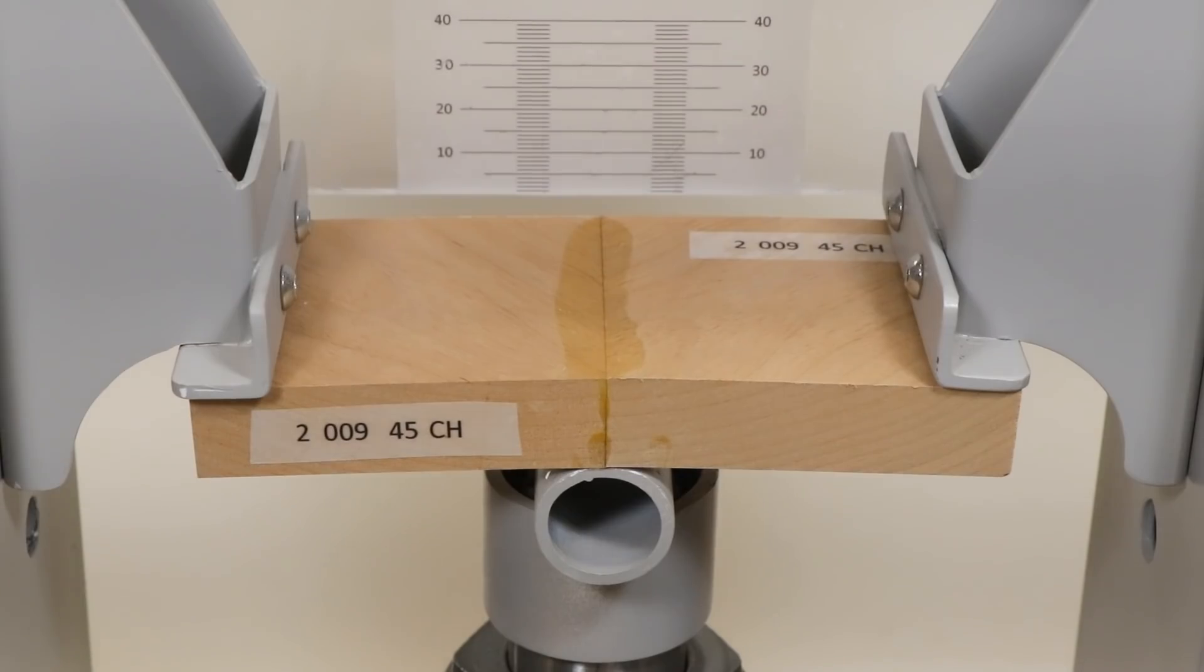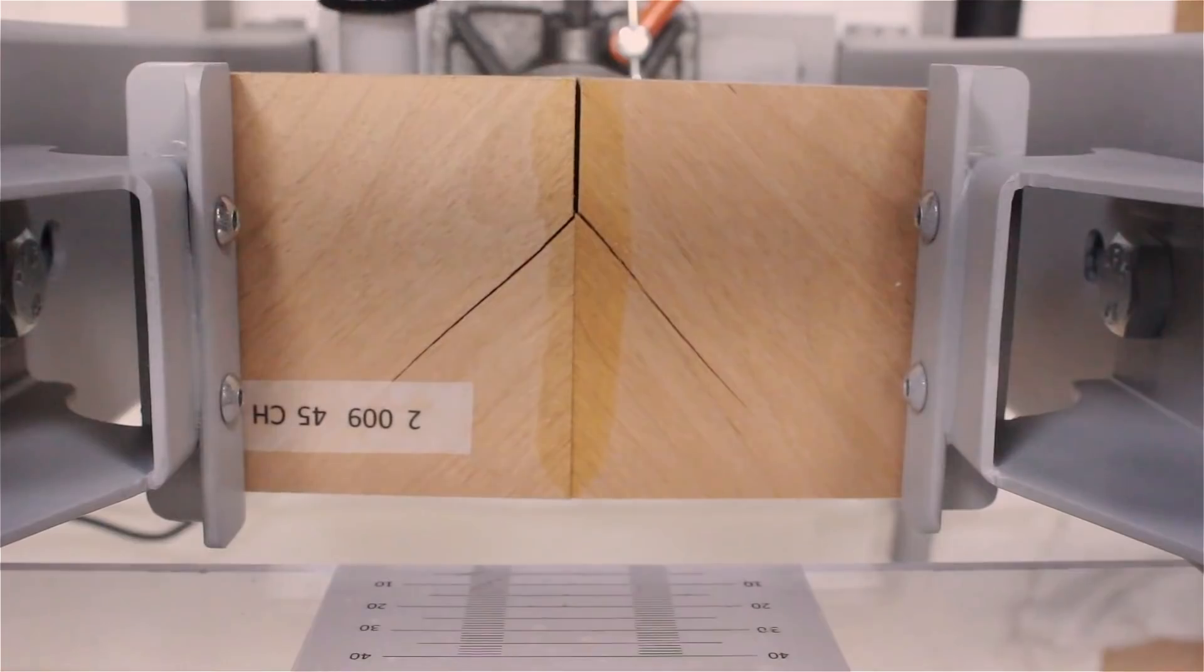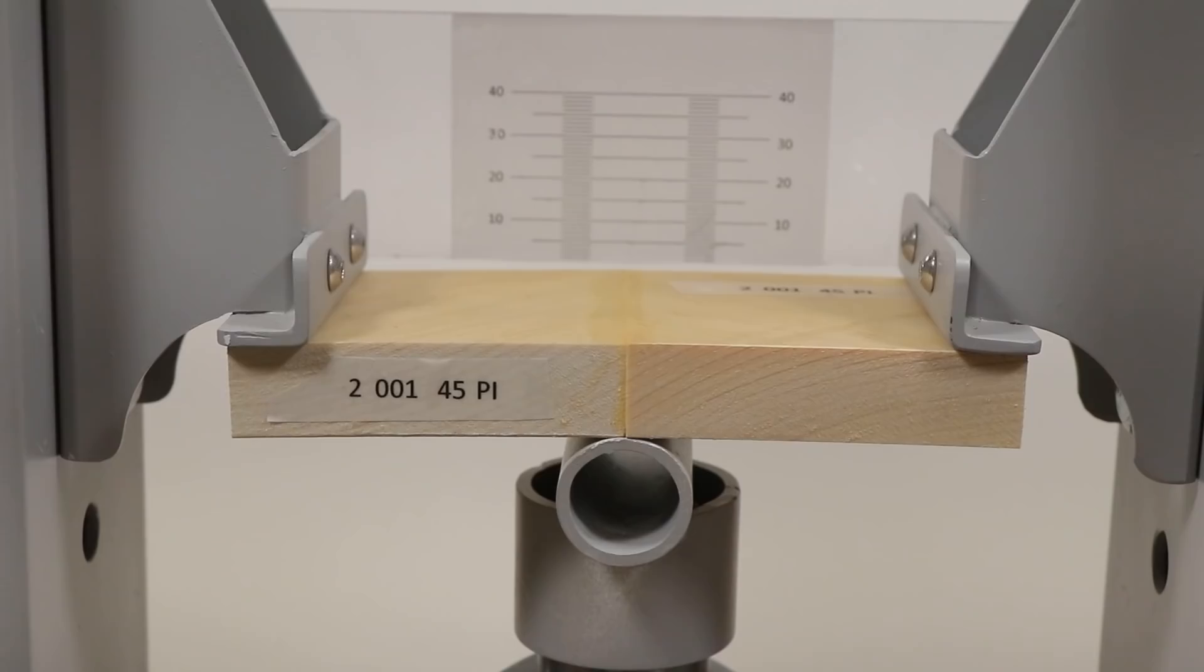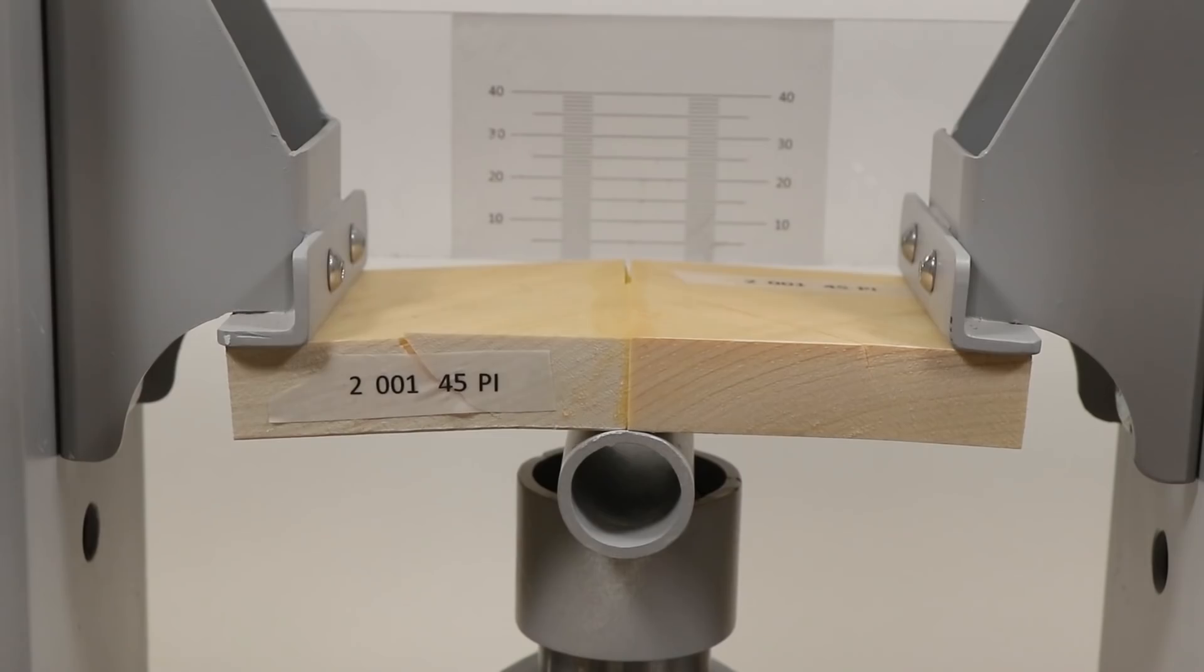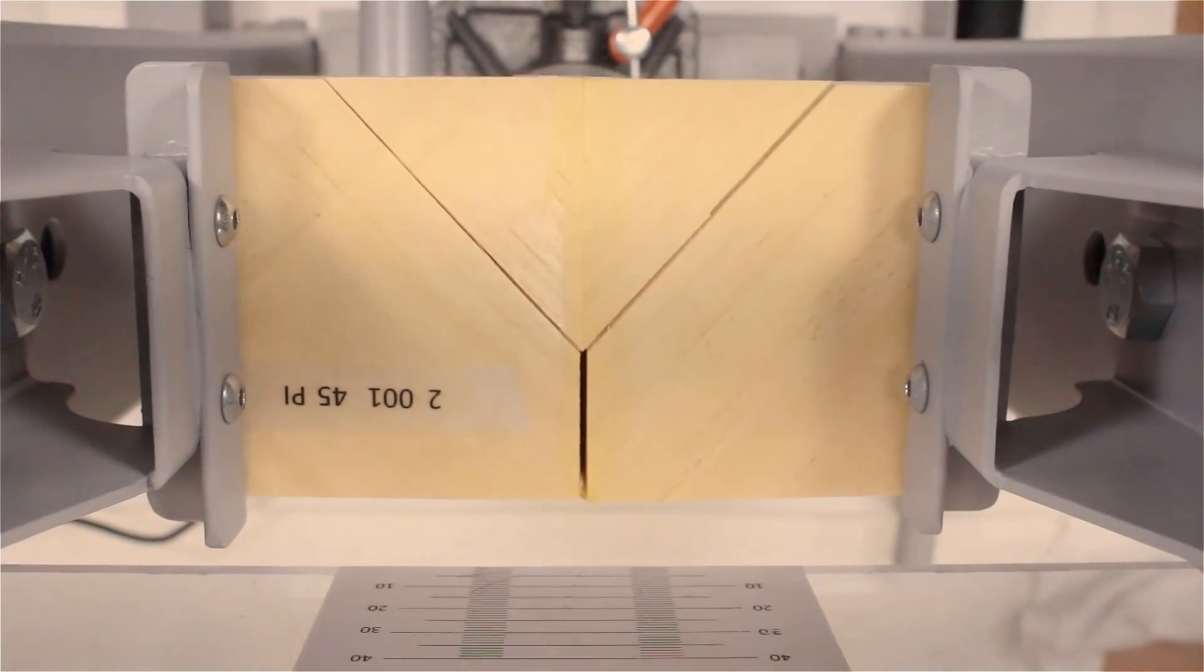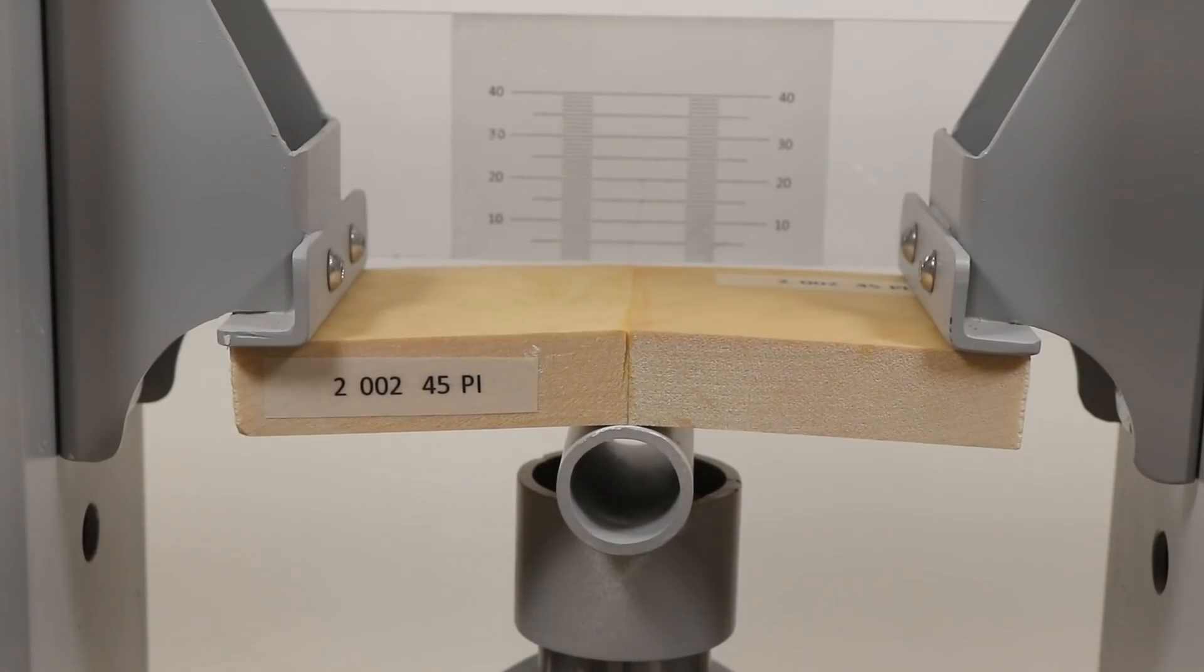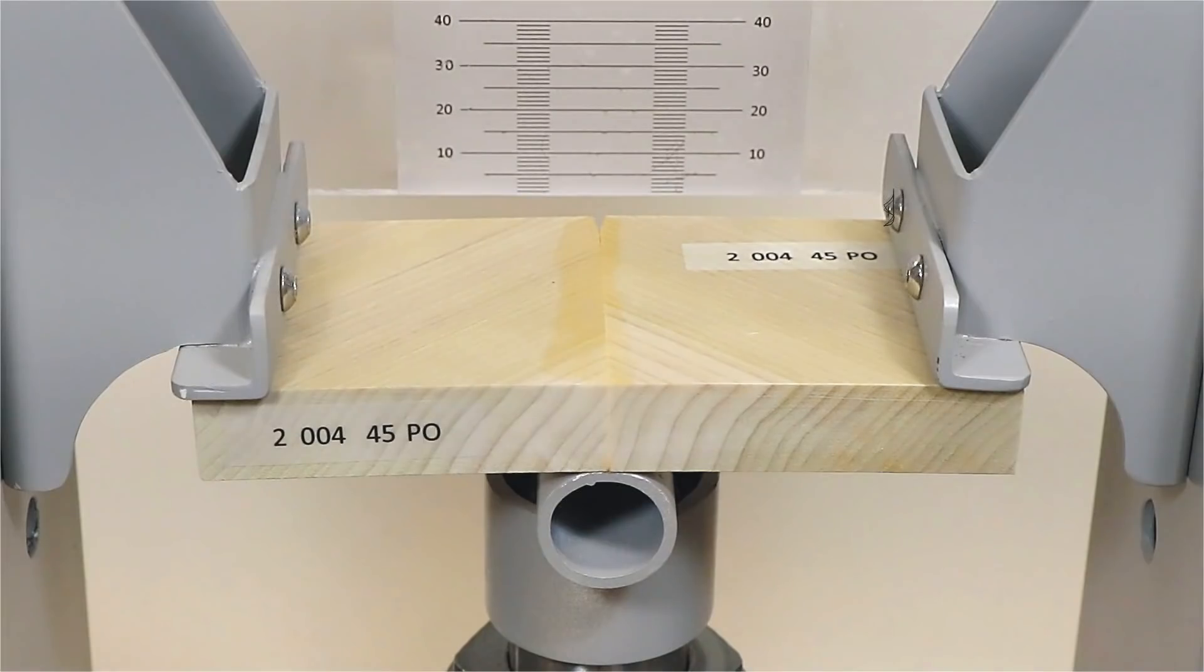This cherry sample is fairly typical. The break starts in the glue line but quickly splits the lignin bonds as well. In the pine samples, the lignin bonds gave up first.